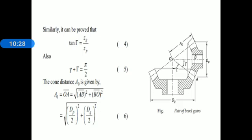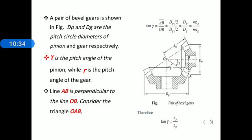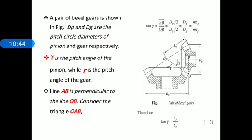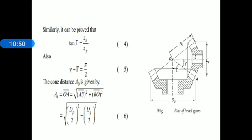Similarly, the pitch angle for gear: tan λ = zg/zp. Equation 3: tan γ = zp/zg for pinion. Equation 4: tan λ = zg/zp for gear. The sum of pitch angles: γ + λ = π/2 = 90 degrees. Another important parameter is the cone distance, found using the Pythagorean theorem on right-angle triangle ABO: AO = √((dp/2)² + (dg/2)²).